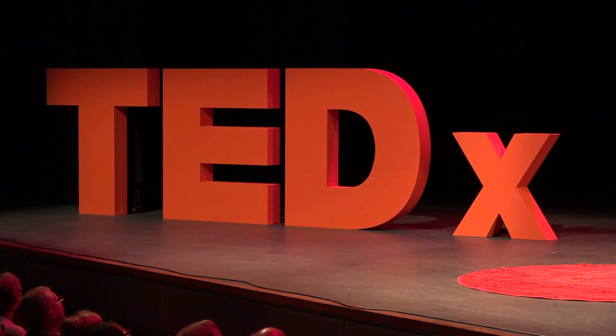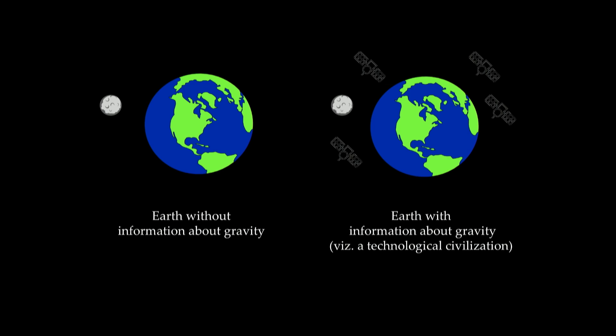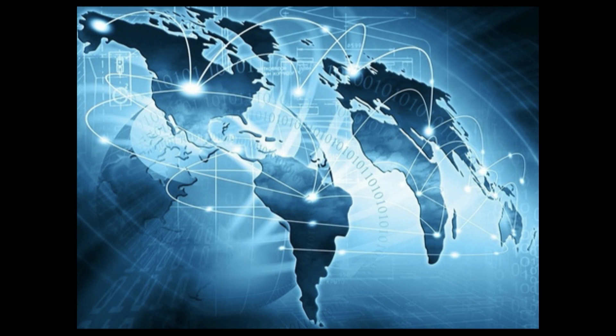Earth without a technological civilization has no satellites. Earth with it has satellites. The dividing line is that Earth has systems that generate information and use information to create new possibilities. Information changes the world. We live in the information age — everyone has a cell phone nearby, and a text from a friend changes or helps decide what you do next. You are impacted by information every day.